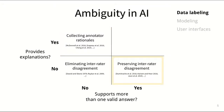Yet other approaches view disagreement as a useful signal and try to preserve it somehow. But only little work has explored the reasons why labelers disagree in the first place and under what circumstances cases of disagreement can be either resolved or should be marked as ambiguous.